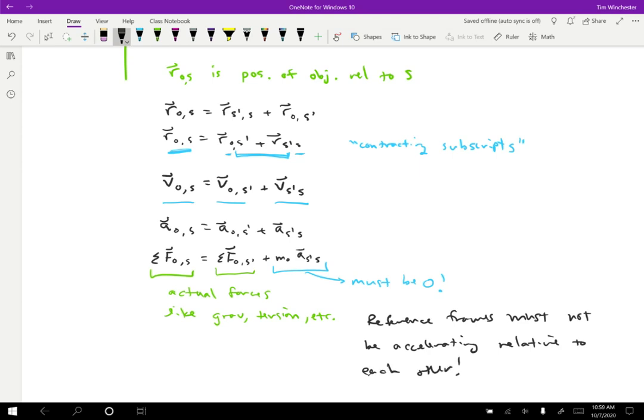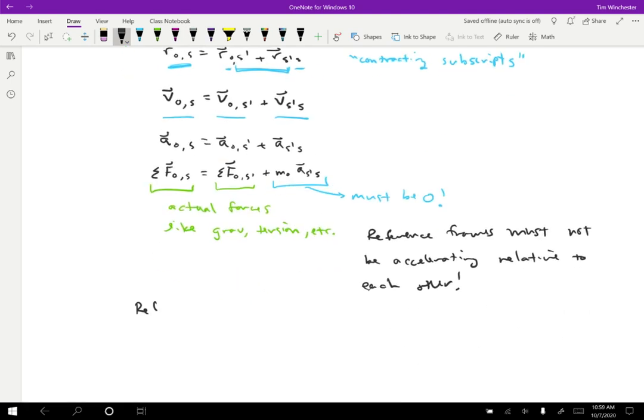If that term is zero, that means that reference frames must not be accelerating relative to each other. Because if they are, then we'll have to make up different forces in different reference frames. And that does not seem like sensible physics. So we need to force the reference frames to not be accelerating. But notice that the velocities can be different. So reference frames can have different velocities, and Newton's laws still work.